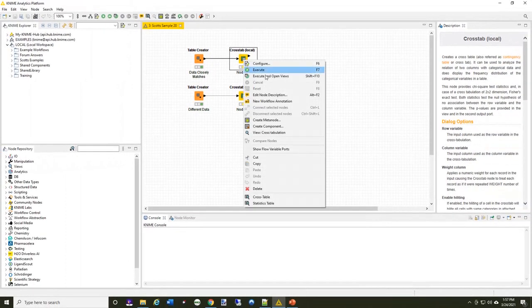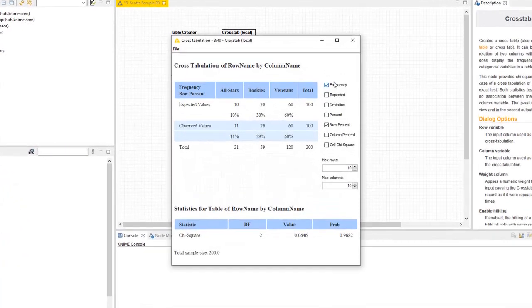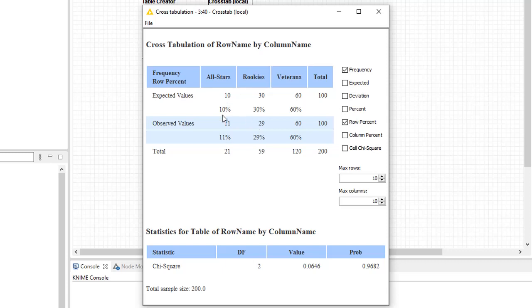When I execute and open the views, what I get here is the expected values are 10, 30, and 60 representing those percentages, and the observed values were 11, 29, and 60. I get, for degrees of freedom, 2, the value of 0.06 and the probability 0.96.